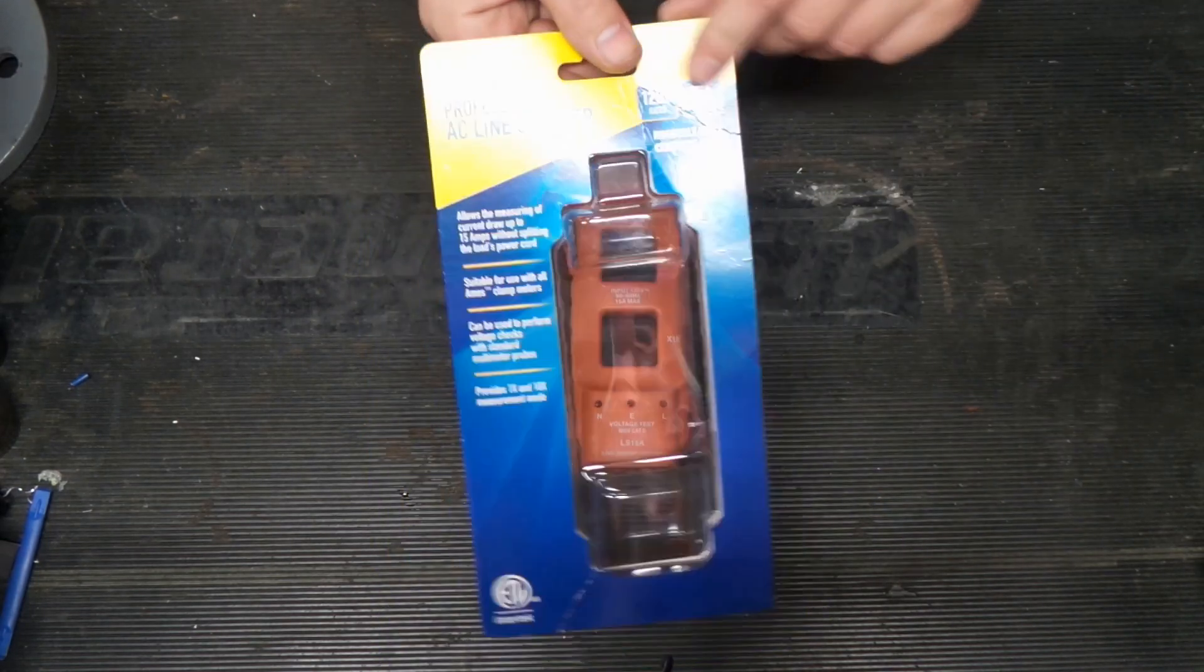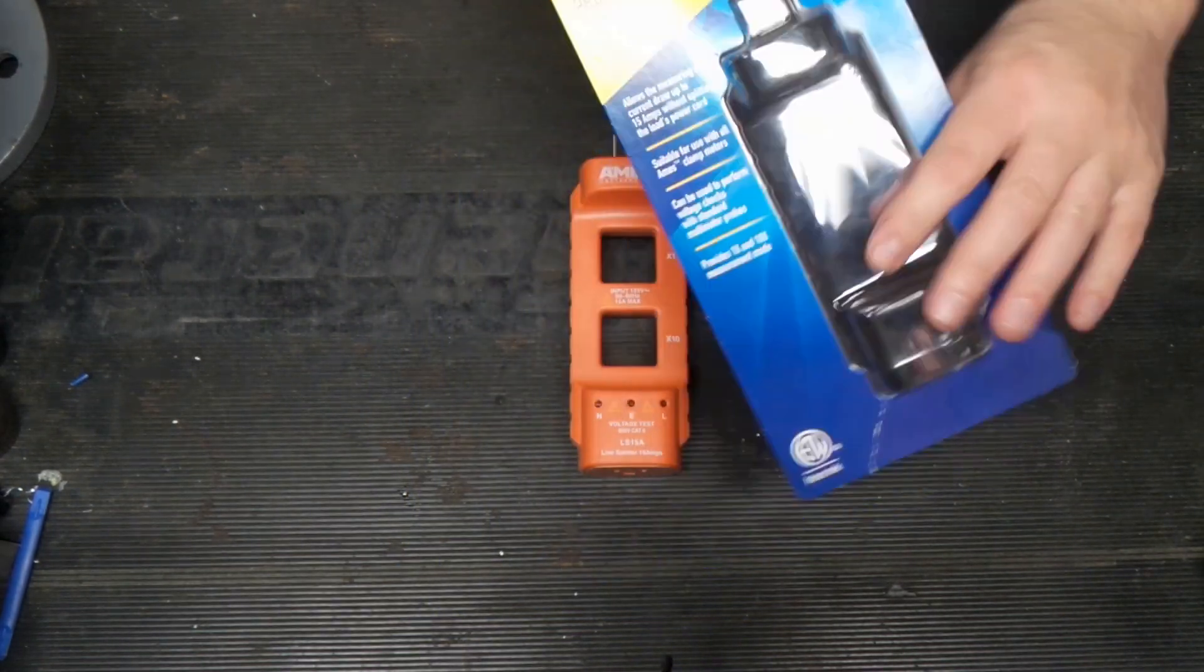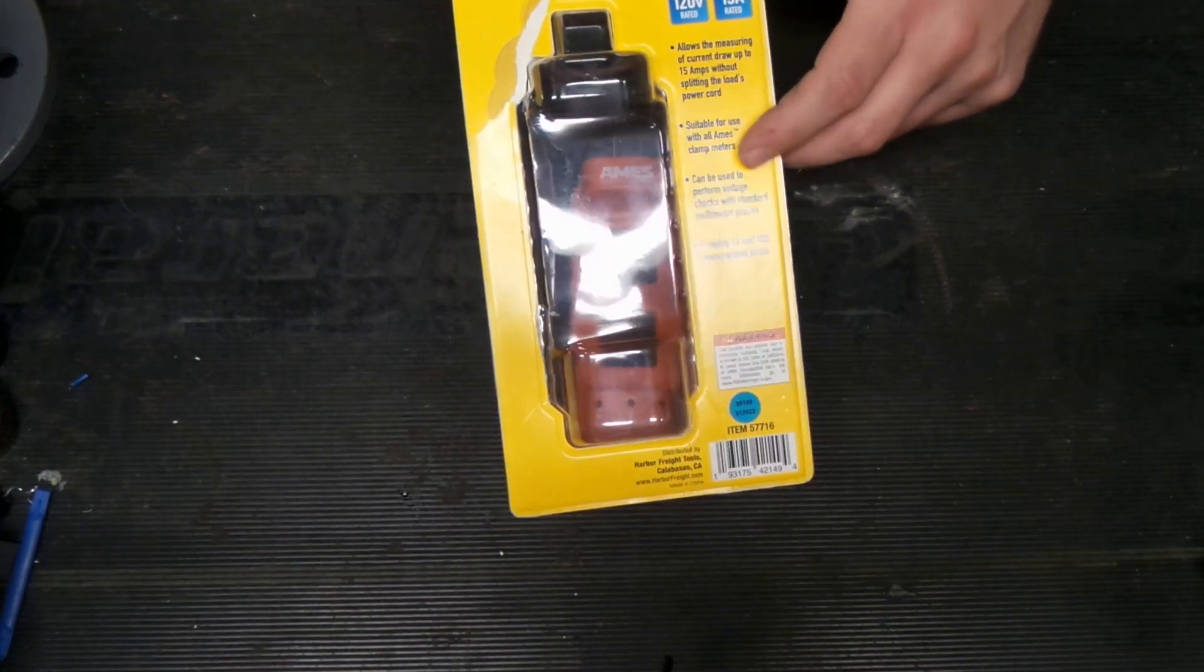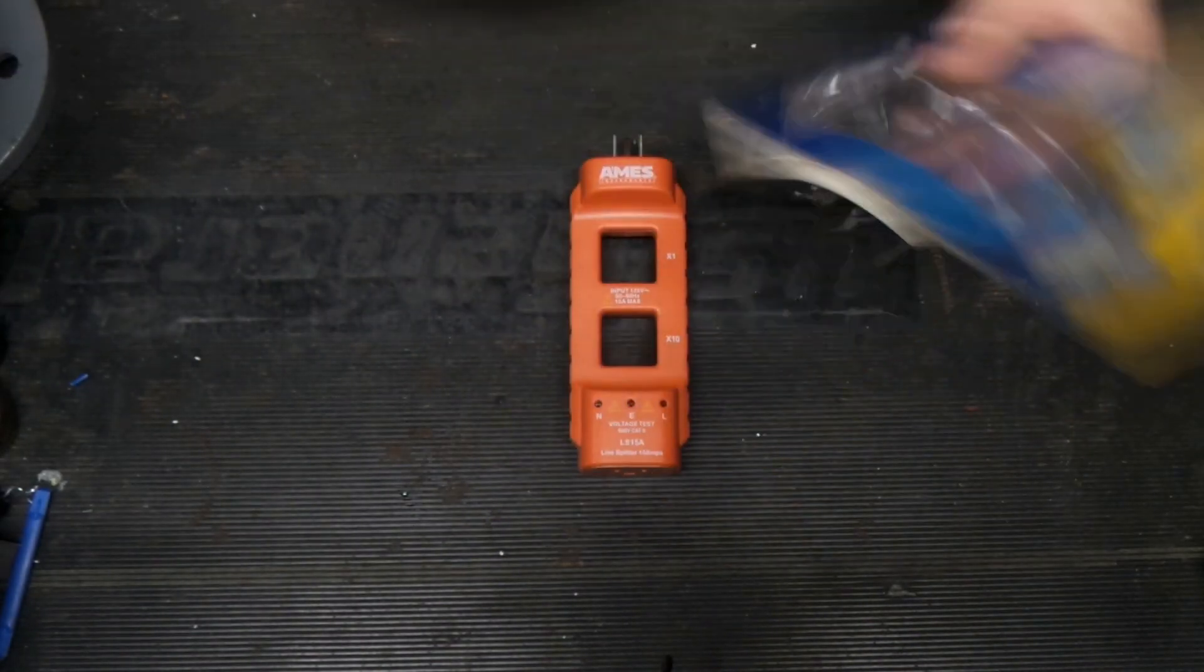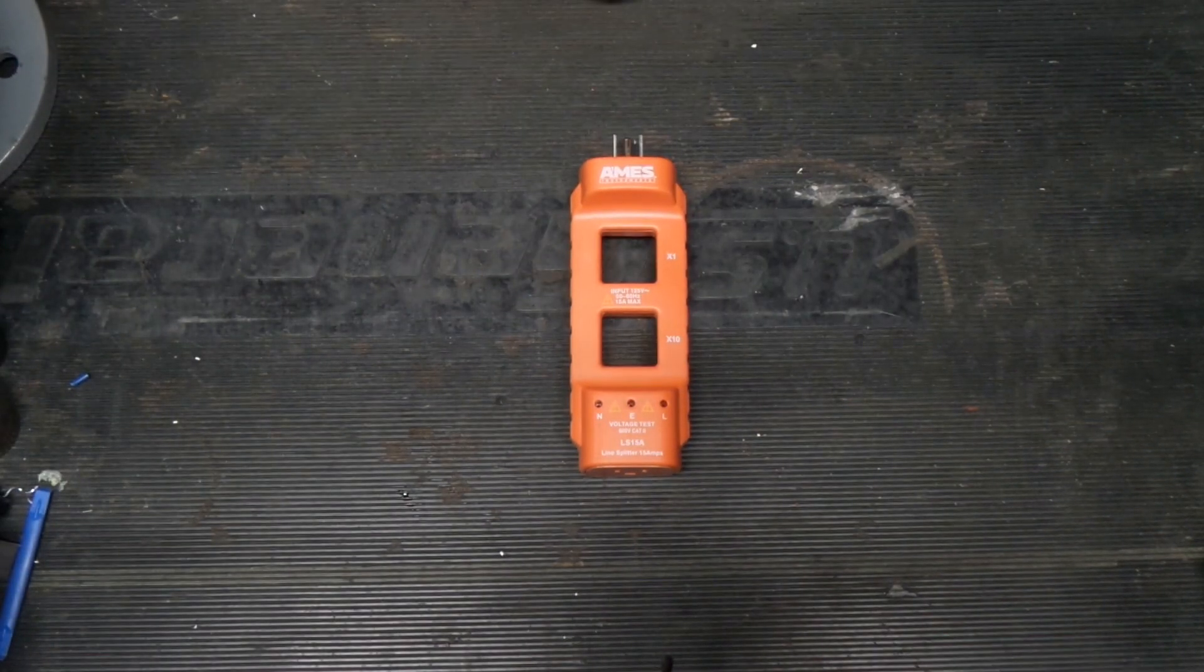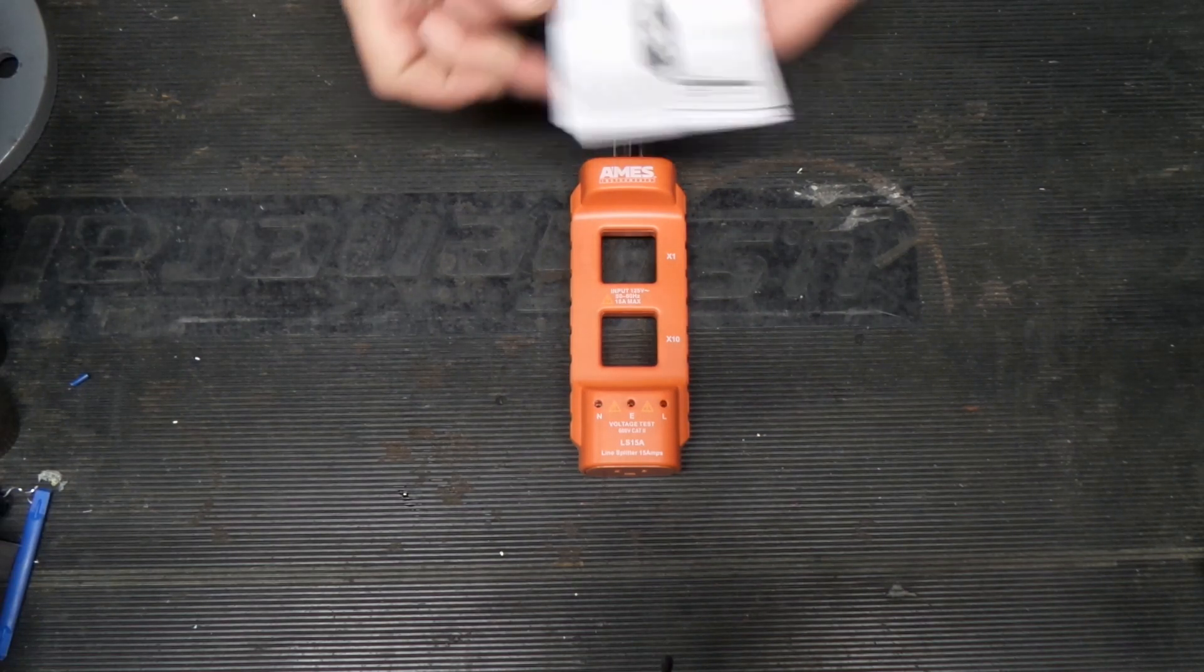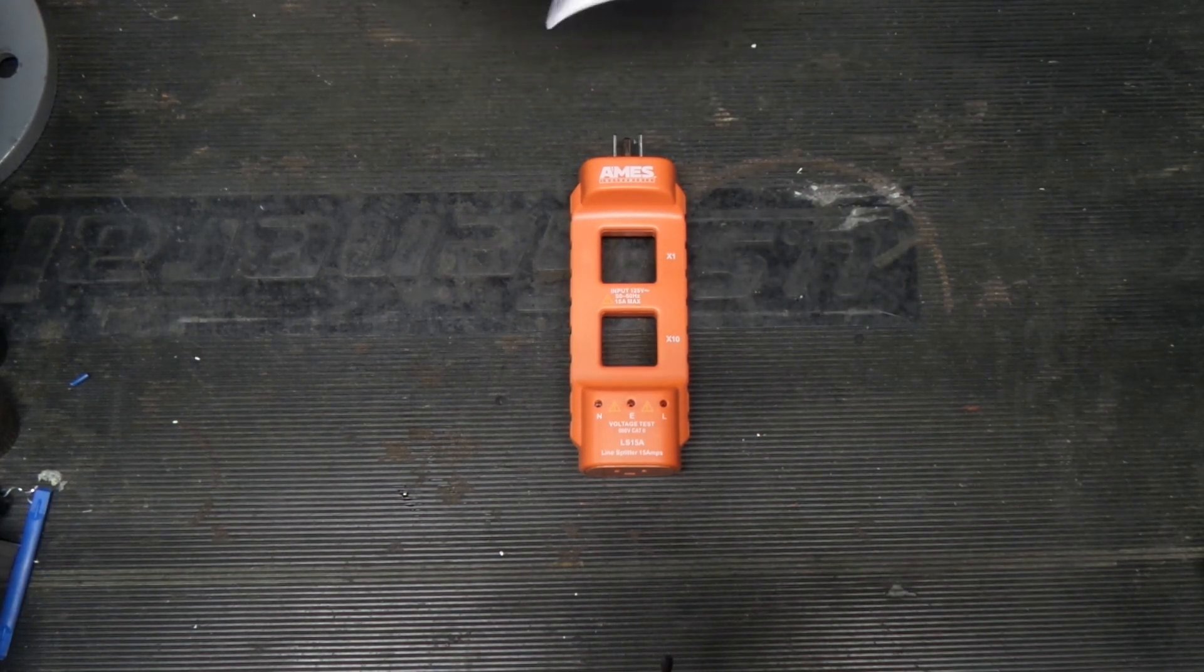So it's 15 amp rated, allows you to check the current with your amp probe, says it works with all of their stuff, Aims meters and everything else. This is Harbor Freight if you didn't know. Nothing really spectacular coming out of that. Let's get that into the trash. It does come with some instructions.